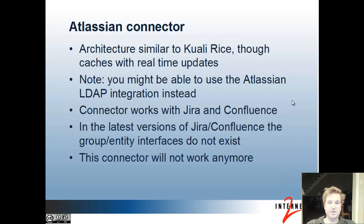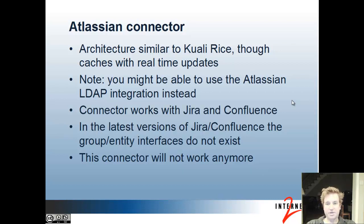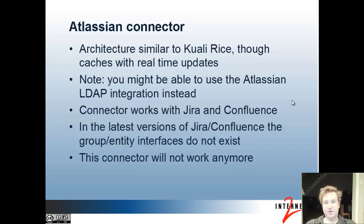The Atlassian connector is similar, although there's no cache on the other end of the group service in Atlassian, JIRA, or Confluence, so it calls that interface all the time. That interface will cache everything from grouper, and then it can use XMPP for real-time updates. You might be able to use the Atlassian LDAP integration instead if your LDAP has groups with members and members with groups, but in our case we don't have that for security reasons.